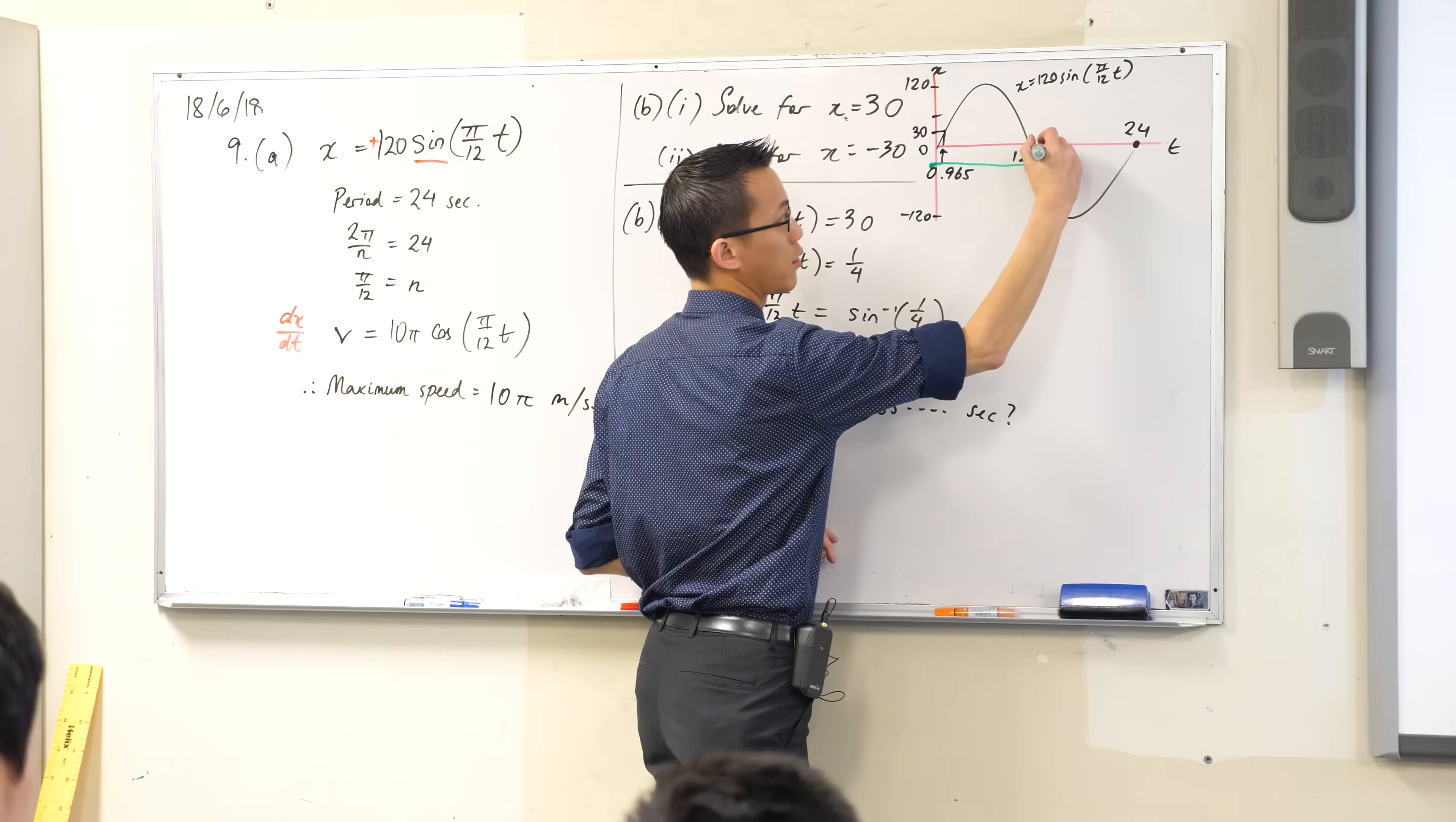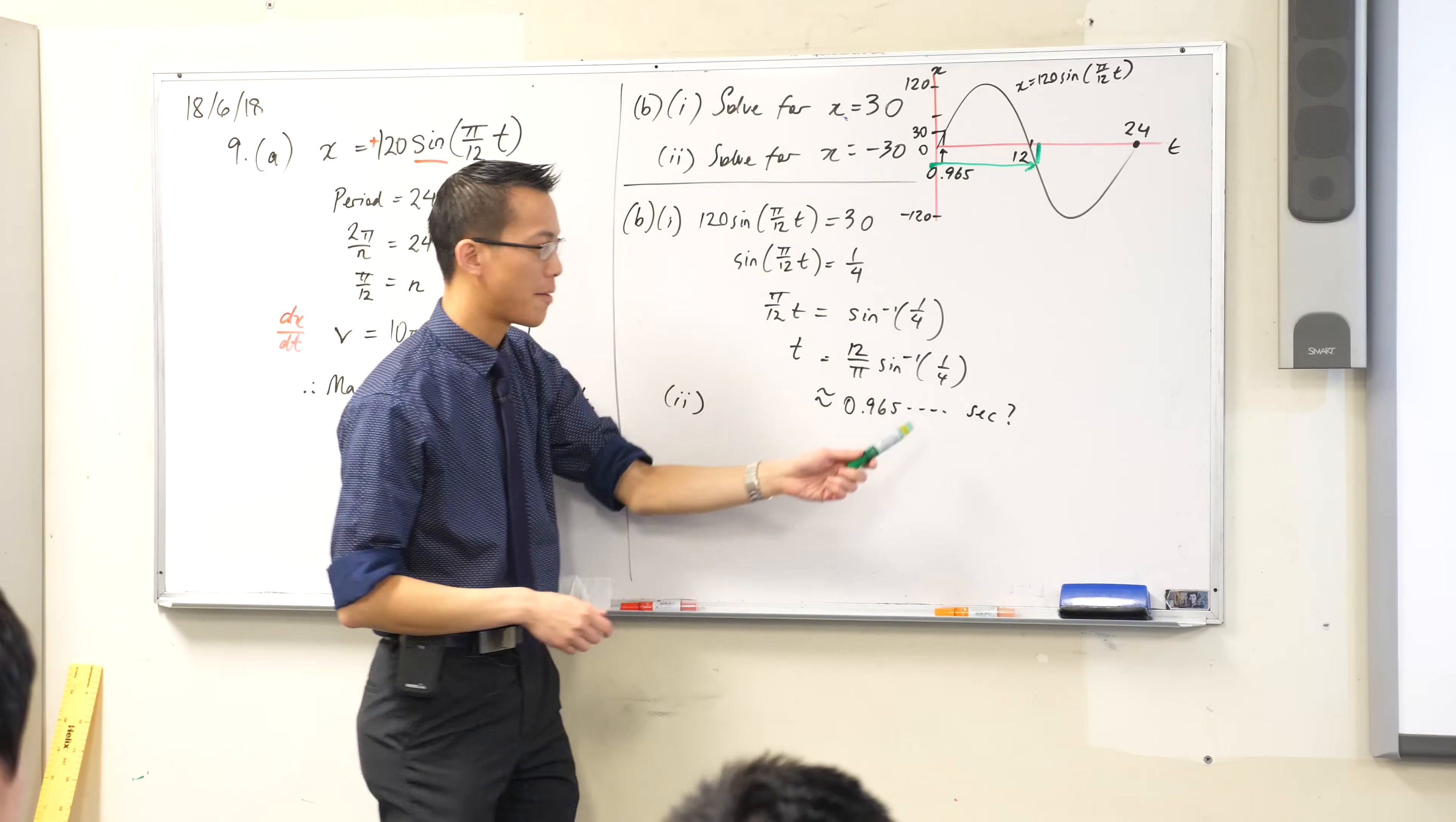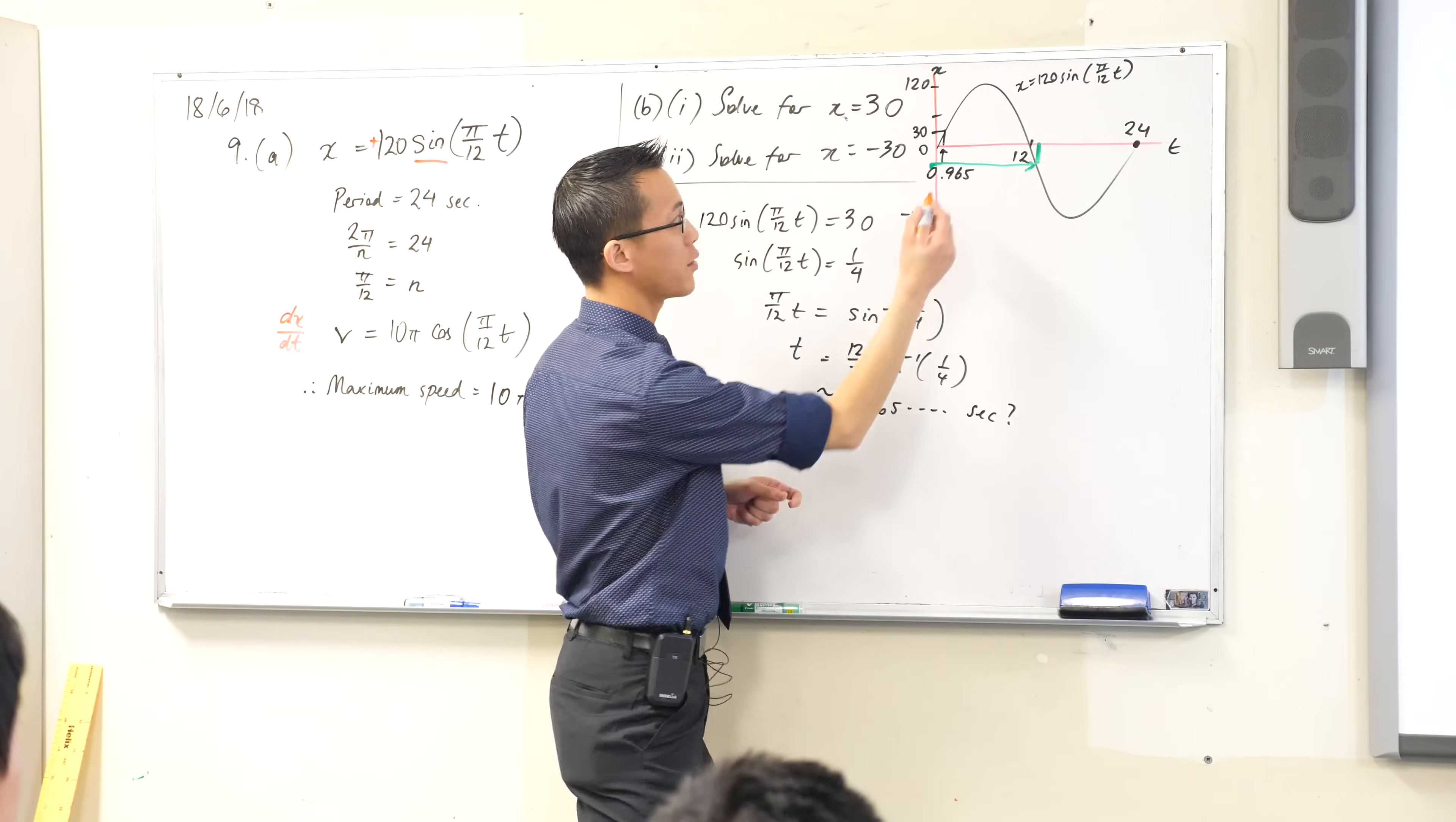So have a look at where that is on the graph. It's roughly there. Now I said you shouldn't need any equations to get this answer. Have a look. How are you going to work out where that is on the basis of this piece of information? Say that again, Paul. Plus 12. What's going on here?